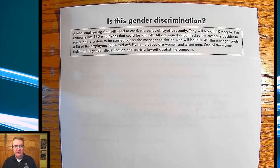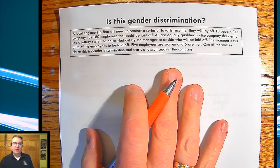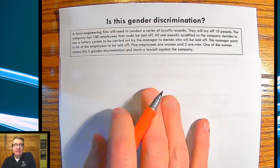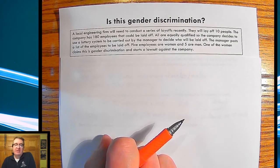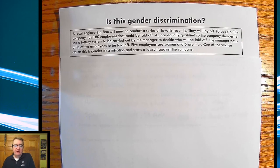What we're going to be talking about today is setting up tests and how to prove whether or not something actually is true. The example that we're going to use here is that there's a local engineering firm who needed to conduct a series of layoffs. Recently, they will lay off 10 people. They decide, since there's 180 employees there and everybody's qualified the same, we're going to use a lottery system carried out by the manager to decide who gets laid off. The manager posts the list of employees to be laid off. Five of the employees are women and five of the employees are men. One of the women claims that this is gender discrimination and starts a lawsuit against the company.